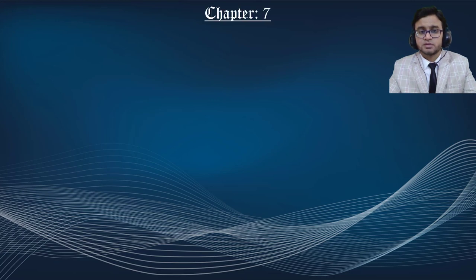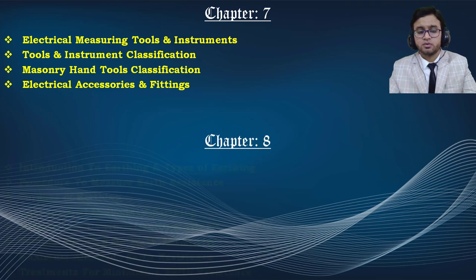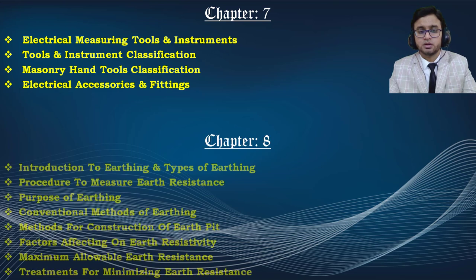Next, chapter 7 covers tools and instruments. These are classified into two areas: hand tools and power tools. We also cover machinery tools, electrical accessories, and fittings — all the components required on site — and we discuss all of these in detail with real-time images.